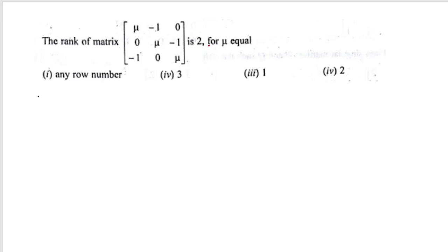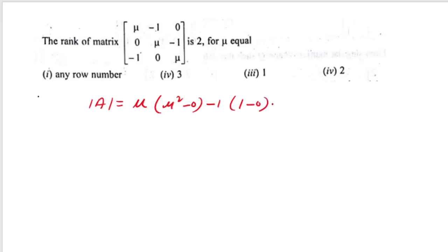The rank of the given matrix is 2 for μ equal to what? For the rank to be 2, the 3×3 determinant must equal 0. Expanding det(A) about the first column gives μ·(μ²) − 0 + (−1)·(1) = μ³−1. Setting μ³−1=0 gives μ=1. At μ=1, det(A)=0 so rank is less than 3, and since it is not all zeros, rank equals 2. The correct option is μ=1.